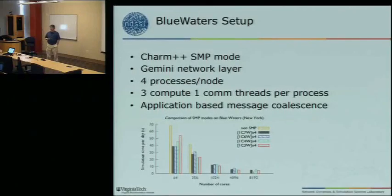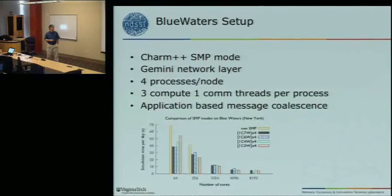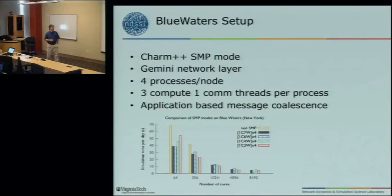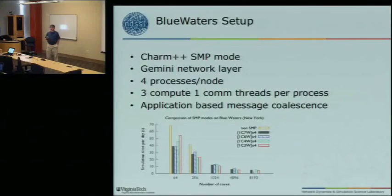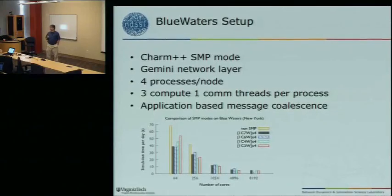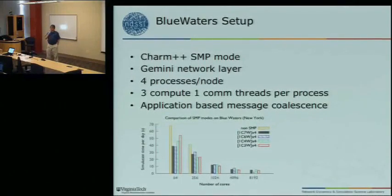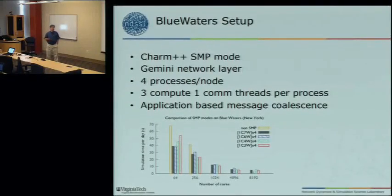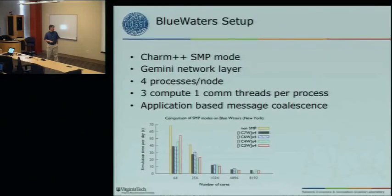We've been doing performance analysis and scaling on Blue Waters. We use Charm++ in SMP mode using the Gemini interconnect layer, with four processes per node. Each process has three compute threads and one communication thread. We do application-based message coalescence — we generate a large number of very small messages, so we pack them together to reduce the message count in the system. We've also been looking at the mesh streamer, now called TRAM, which helps a lot at lower core counts especially with memory usage. Performance is fairly good, and we decided on this configuration based on the numbers we ran on Blue Waters.